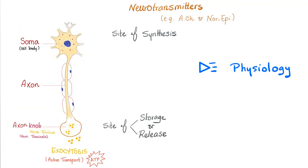Acetylcholine and norepinephrine are examples of neurotransmitters. Who makes them? The neuron in the soma or the cell body. This is the site of synthesis. And then they get transported through the axon into the axon knob or the nerve terminus, or the axon terminalis. And then they get released from the vesicles through exocytosis. Exocytosis is an active transport. Check out my physiology playlist to learn more. So the soma is site of synthesis. Axon terminalis is the site of storage and release into the synaptic cleft.